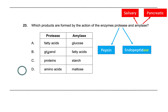Option B also says amylase produces fatty acids — that's wrong; amylase makes glucose, so both parts of B are incorrect. Option C says a product of protease is proteins — that's not true because proteins are the substrate, not the product. When an enzyme acts, it binds to a substrate — the thing it wants to break down — and produces products, which are the broken-down form. Proteins bind with protease but are the substrate, not the product. Similarly, starch is the substrate of amylase, not the product, so C is also incorrect.